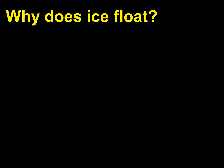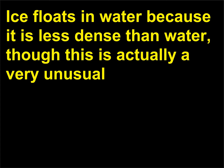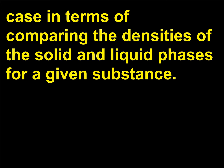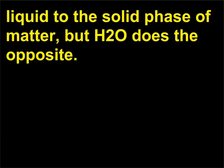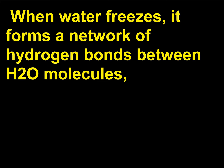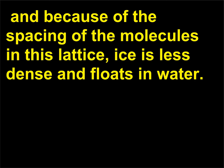Why does ice float? Ice floats in water because it is less dense than water, though this is actually a very unusual case in terms of comparing the densities of the solid and liquid phases for a given substance. Most substances increase in density when moving from the liquid to the solid phase of matter, but H₂O does the opposite. When water freezes, it forms a network of hydrogen bonds between H₂O molecules, and because of the spacing of the molecules in this lattice, ice is less dense and floats in water.